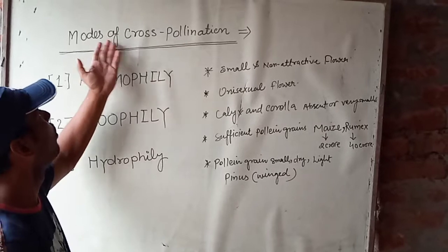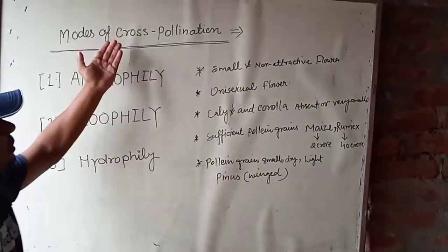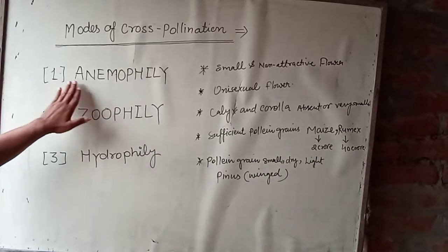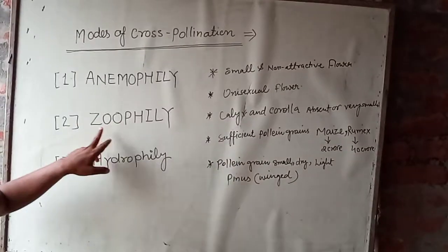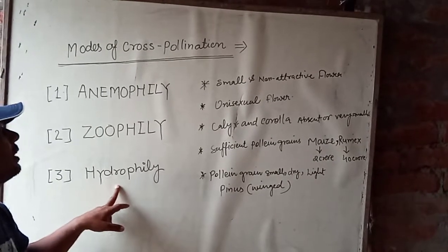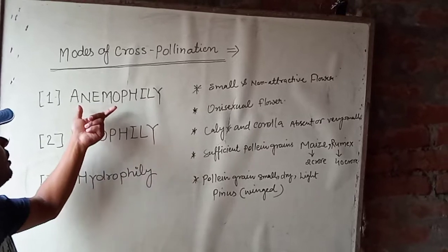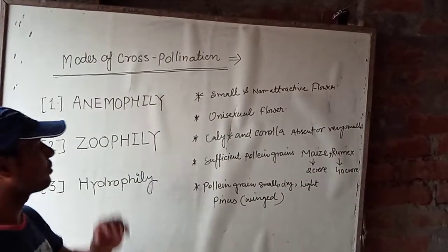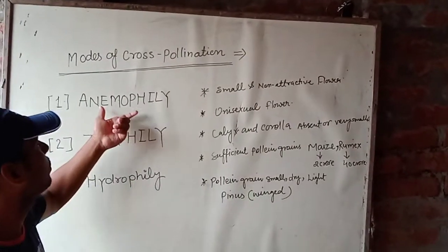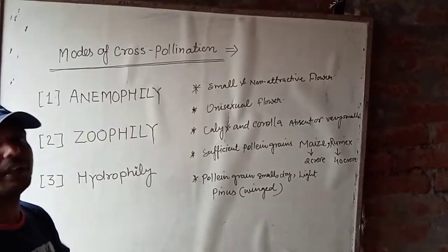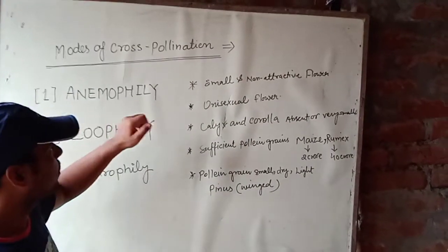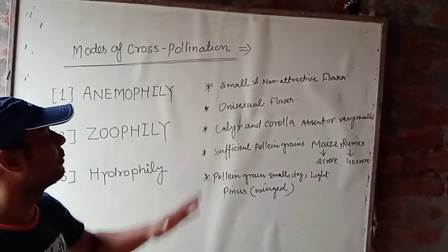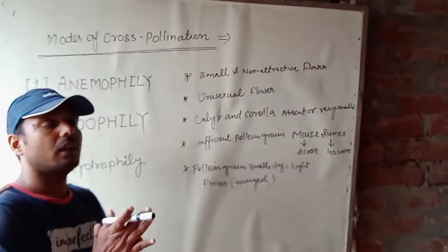In this video we will be talking about modes of cross-pollination. There are three modes of cross-pollination: first, anemophily; second, zoophily; and third, hydrophily. In this video we will discuss only anemophily. Anemophily is pollination that takes place through the air, and we will talk about anemophilous flowers.